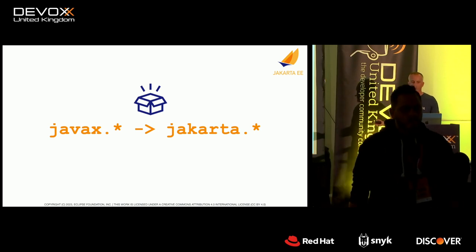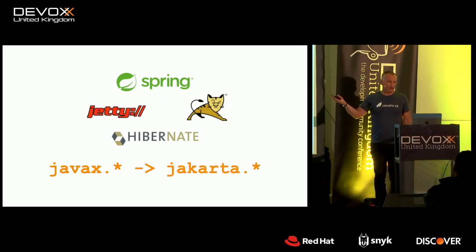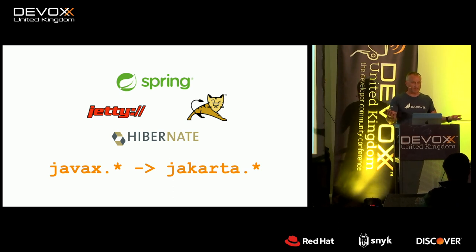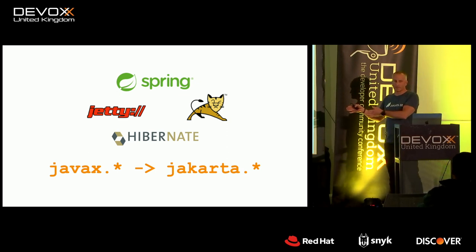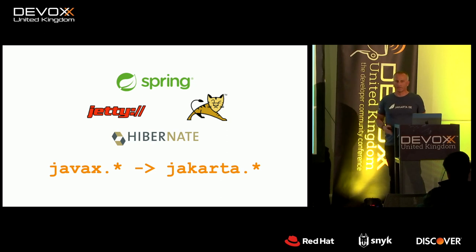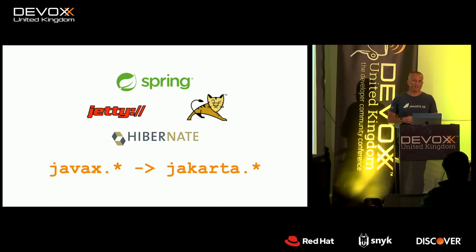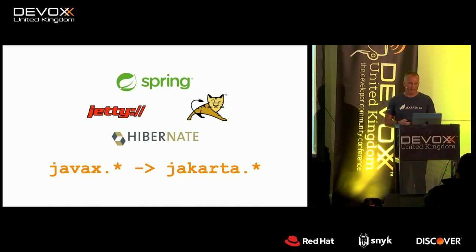The migration from EE8 to EE9 is all about the namespace — that's where we did the namespace switch from javax to jakarta. This affects the entire ecosystem, not only those using Jakarta EE directly. You may be using Jakarta EE without knowing it. If you're using Spring Boot, you will be exposed to this — Spring Boot starts Jetty or Tomcat or similar web servers, and all of these have moved to the Jakarta namespace. Spring Boot 3 is on the Jakarta namespace. Even Tomcat 10+ is on Jakarta. If you're using Hibernate ORM or Hibernate Validation, which is extensively used in Spring, you'll have to change to stay on the latest versions.